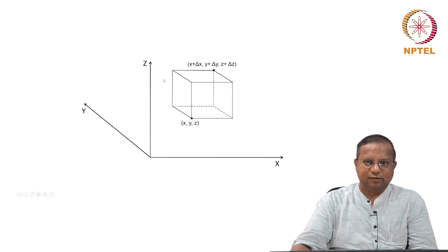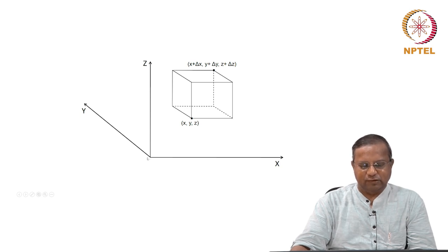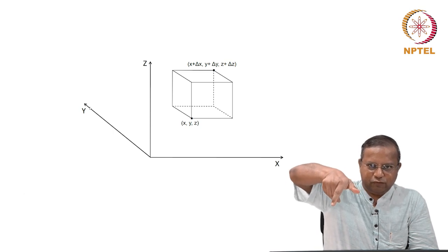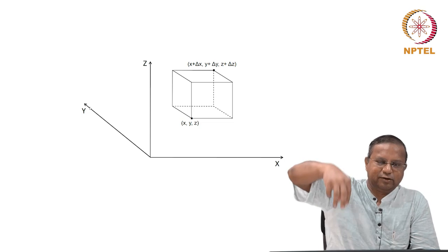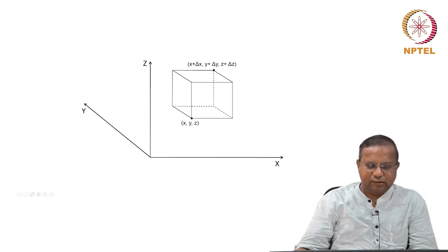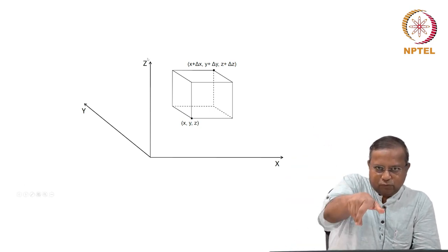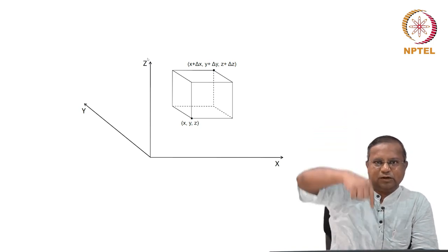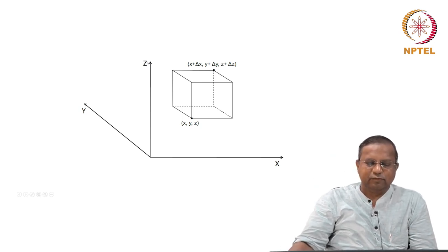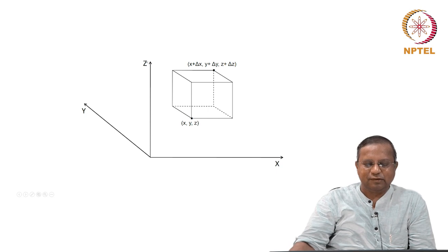To do the analysis, let us consider a Cartesian coordinate system — a right-handed Cartesian coordinate system. This is the x coordinate, this is the y coordinate. You know the right-handed rule: you go from x to y, which gives you the direction of z. The right-handed screw moves in this direction and therefore z is in this direction. Remember this — I normally find that many people do not appreciate this in the first go, so it is good to understand this very clearly.